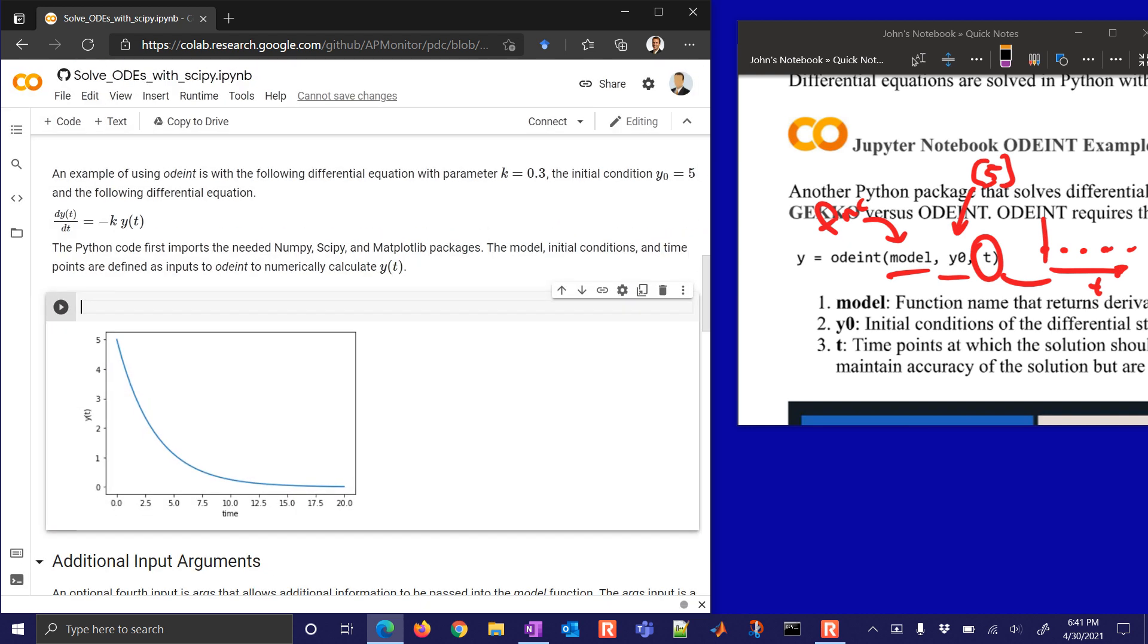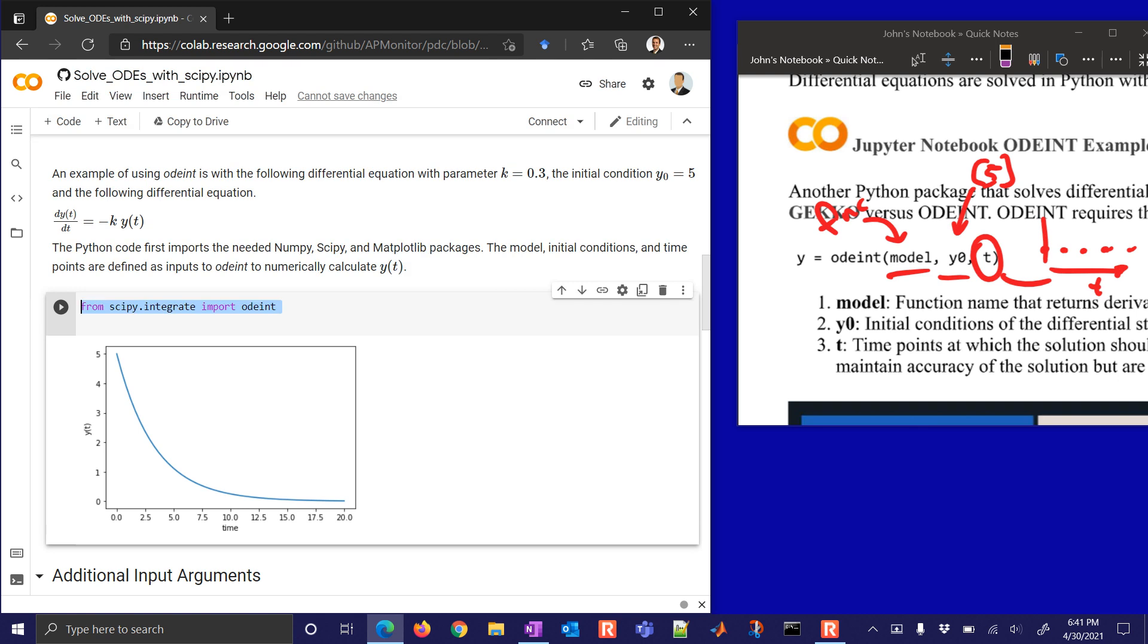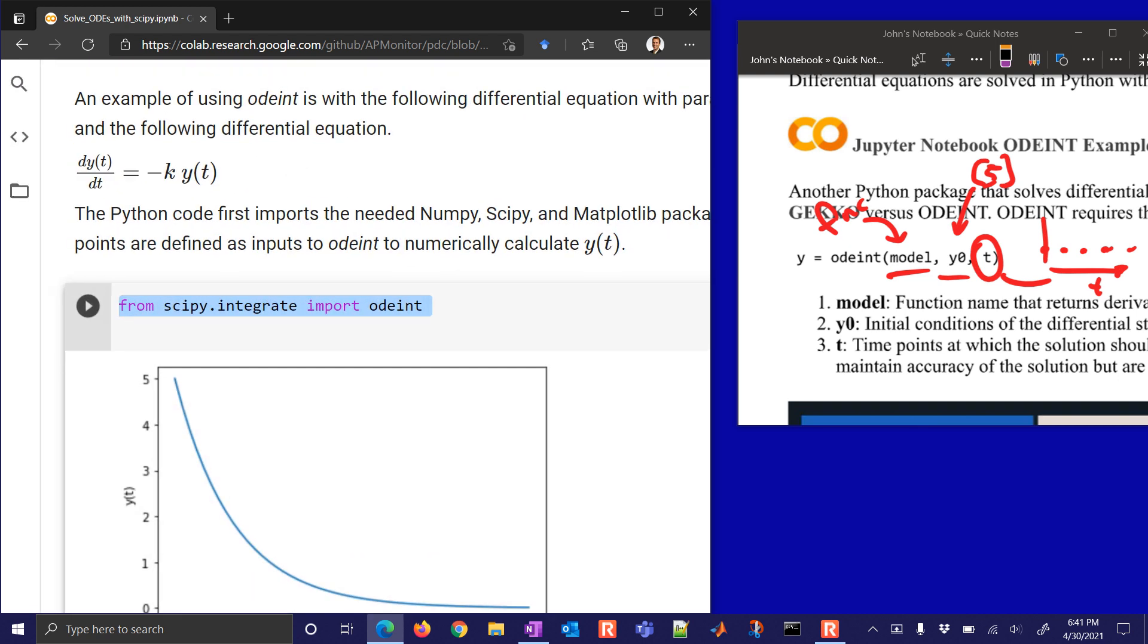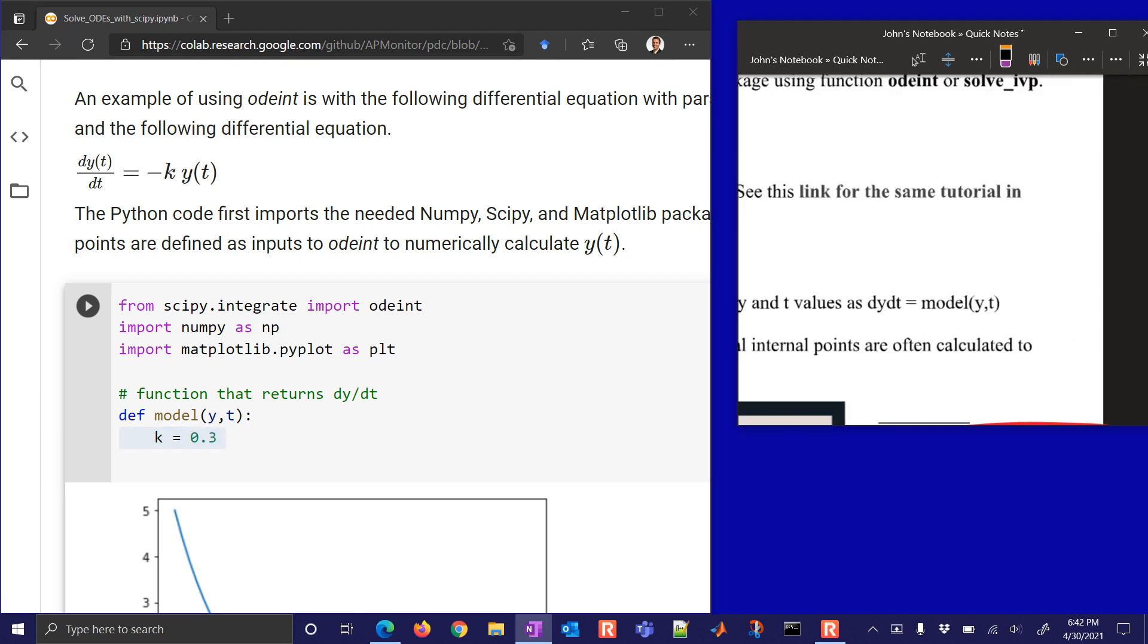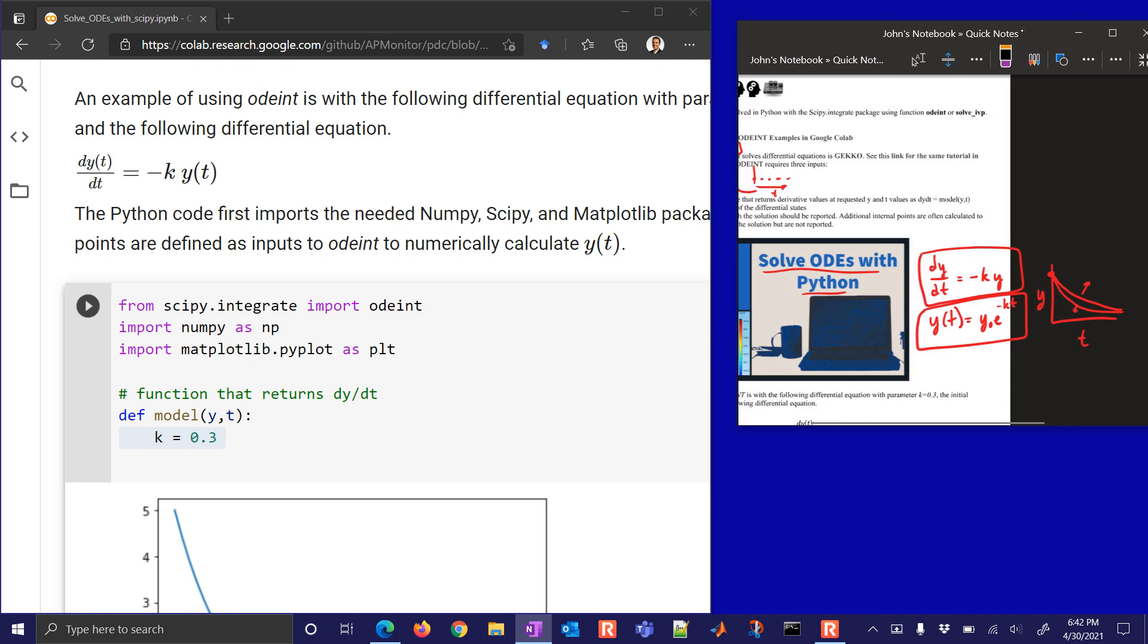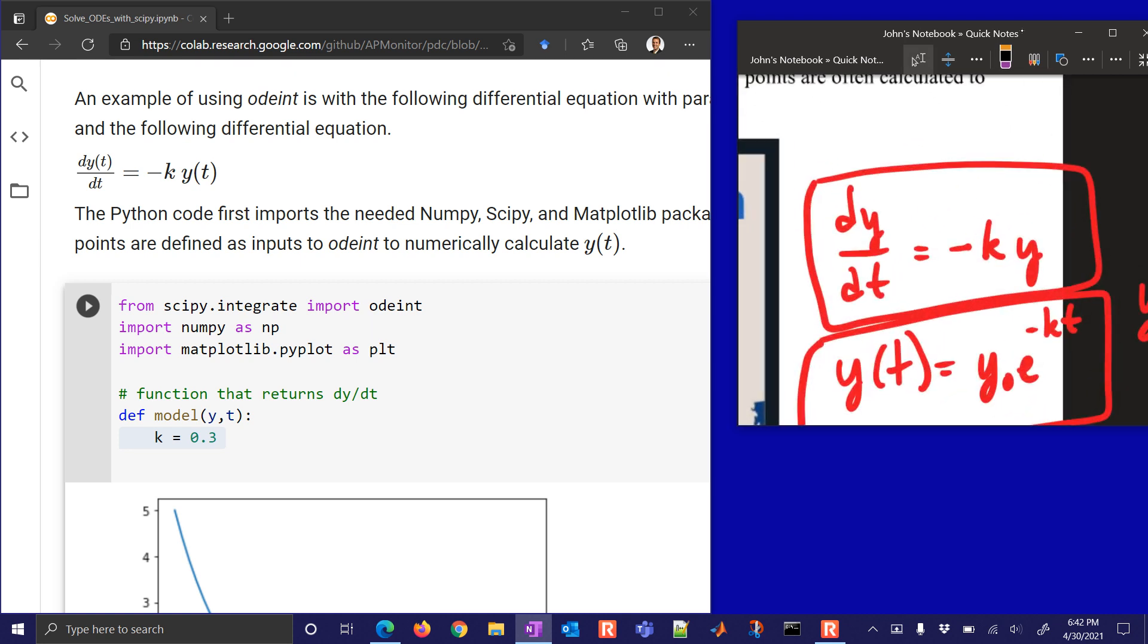First of all, we need to import odeint. Next, we'll import numpy, and then also matplotlib, just to be able to plot the results. Then we need this function, this model function, that returns the derivative. We'll define a new function. We'll call it model, with inputs y and t. In this case, we have k equals 0.3, like we wrote out over here. So this is our problem right here.